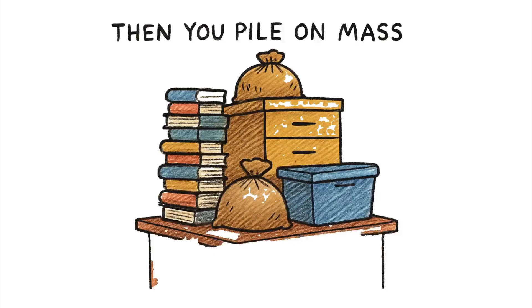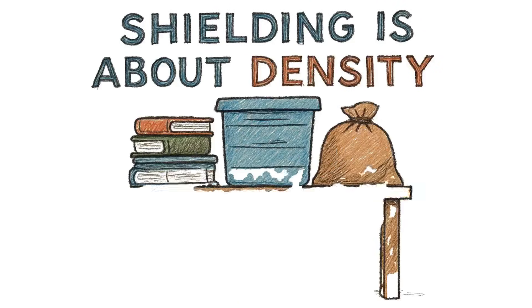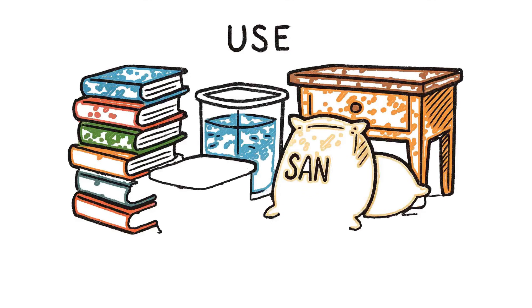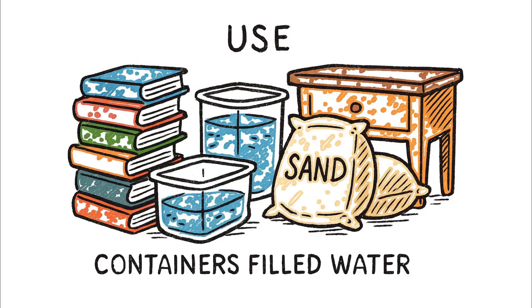Then, you pile on mass. Shielding is about density. Use stacks of books, containers filled with water, bags of sand or soil, even pieces of heavy furniture.